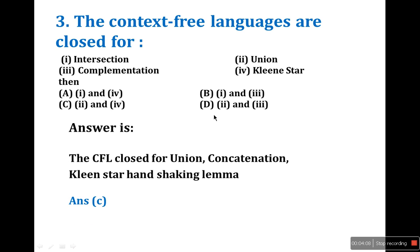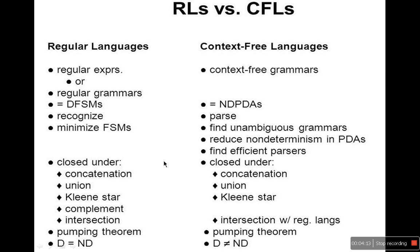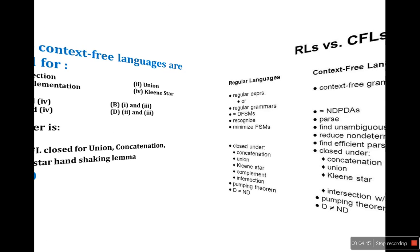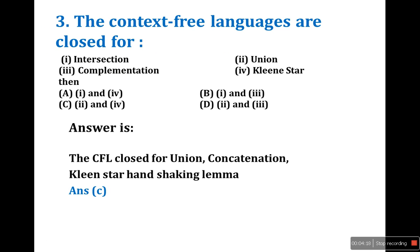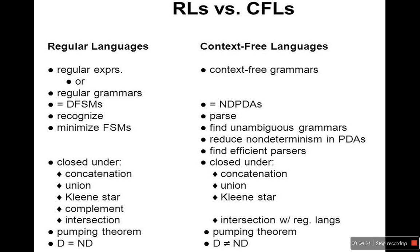For this question, the answer is union and Kleene star — context-free languages are closed under union, Kleene star, and concatenation. Concatenation, union, and Kleene star are common to both language types. Only regular languages are closed under complement and intersection.